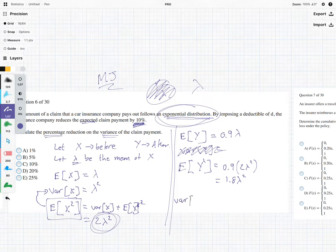And that gives us 1.8 Lambda squared, which means now we can do the variance of Y, because it's going to be the expected value of Y squared minus the expected value of Y squared.